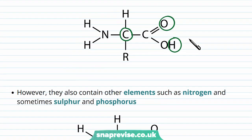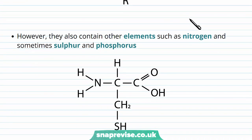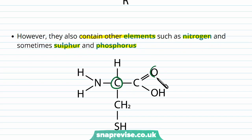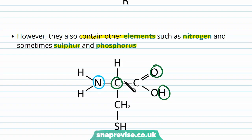However, proteins actually contain other elements. Some of these include nitrogen, and some of them contain sulfur and phosphorus too. So in this example of an amino acid we have carbon, oxygen, and hydrogen, but we also have nitrogen in every amino acid, and in some amino acids we have sulfur as well, and occasionally phosphorus too.